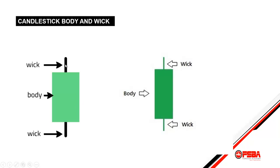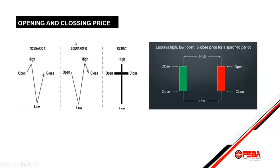A candlestick has two parts: the body and the wick. Every candlestick has both a body and a wick — we call it the wick, not the thread. This is the body of the candle and this is the wick. There is a wick above and a wick below.